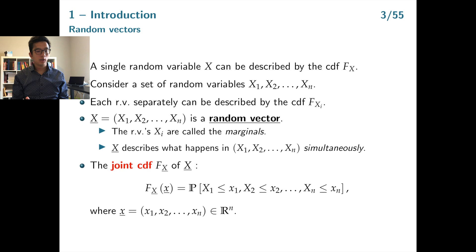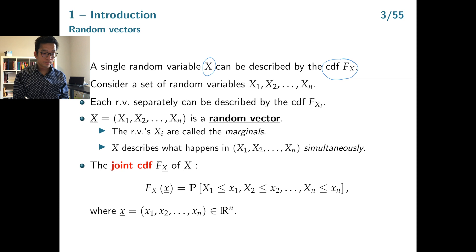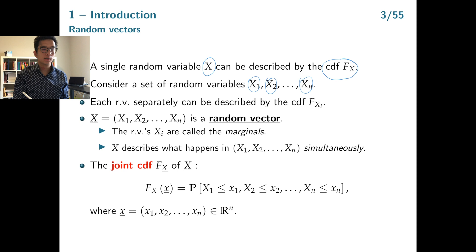So far we focused only on one-dimensional random variables x. We assumed that we are exposed to a loss x, and if we wanted to determine an expectation, a variance, or maybe a stop-loss premium, what we need is the CDF of this random variable. In this lecture we will change the setting: we will assume that we are exposed to multiple risks x1, x2, ..., xn, each representing one of the risks we are exposed to.